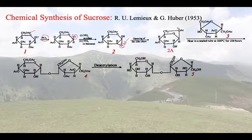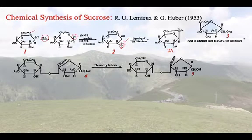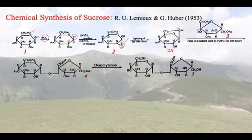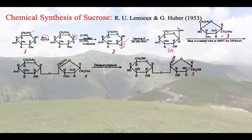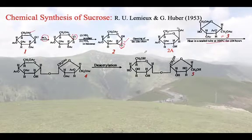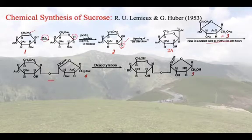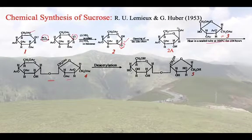Brigl's anhydride was treated with 1,3,4,6-tetra-O-acetyl fructofuranose. They were heated at 100°C for 104 hours — that was a coupling reaction — and the addition product was obtained. That addition product was deacetylated; the acetylated sucrose was deacetylated to get the final product, sucrose.